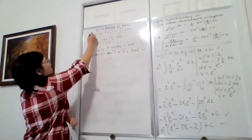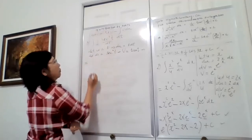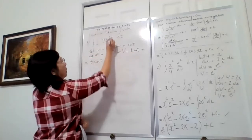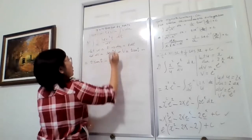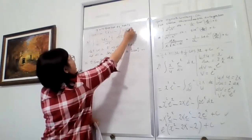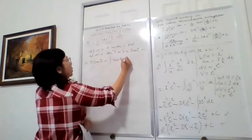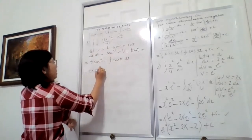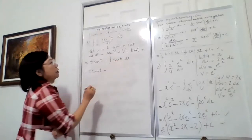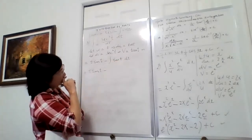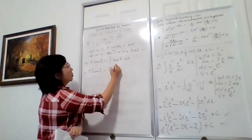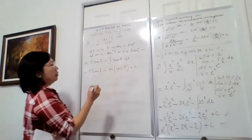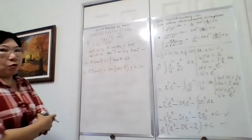So now let's apply the formula. Therefore our answer will be u times v: our u is t and our v is tan(t), giving t·tan(t), minus the integral of v·du. Our v is tan(t) and our du is 1·dt. So the integral of tan(t)dt equals ln|sec(t)|. Our answer is t·tan(t) minus ln|sec(t)| plus C.